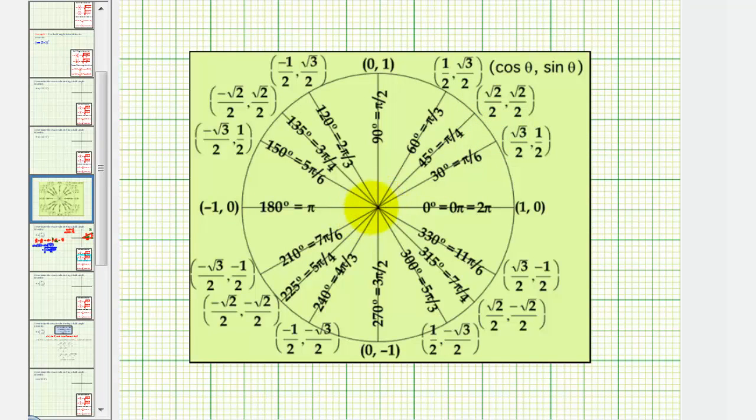Here's the terminal side of pi over six radians, or 30 degrees. And because we have the unit circle, x equals cosine theta. So cosine pi over six, or cosine 30 degrees, is square root three divided by two.